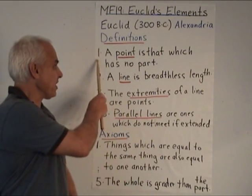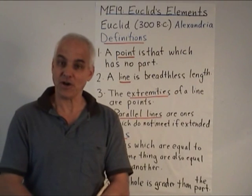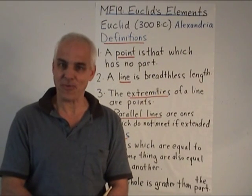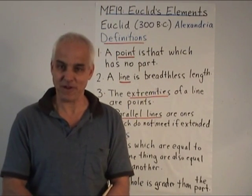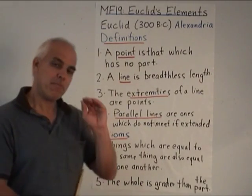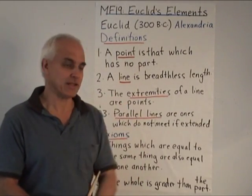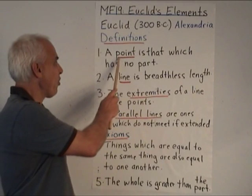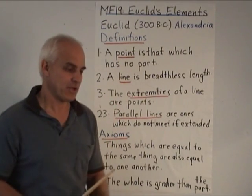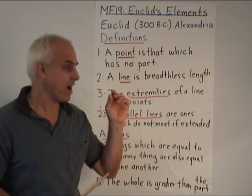Euclid starts with some definitions. These definitions aren't too clear to someone who doesn't already understand what the terms roughly mean, but they do make more precise what Euclid has in mind. So he says that a point is that which has no part. So a point is not supposed to have any finite width.